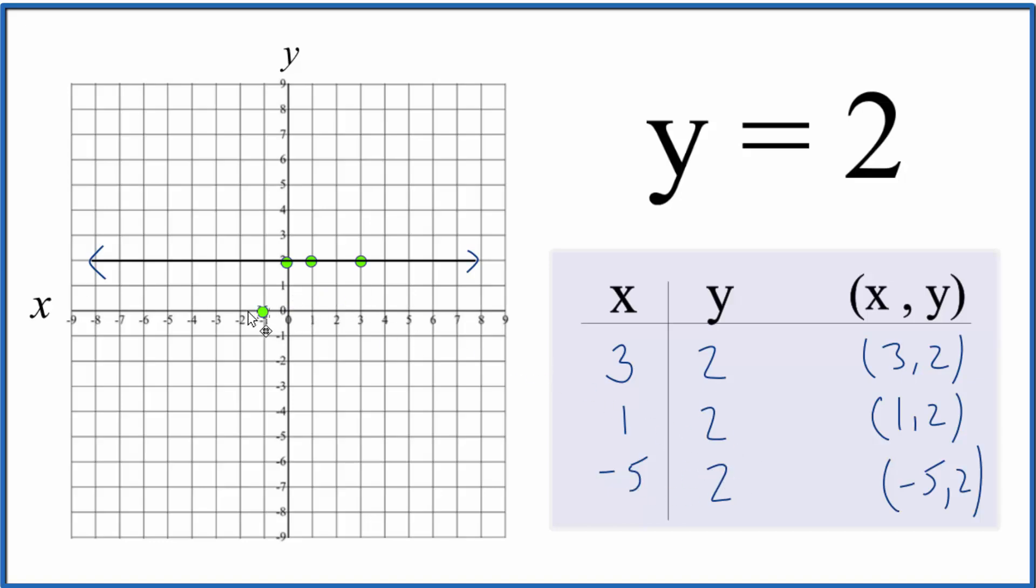Negative 5 for x, y is 2. Right there. So this is the graph for y equals 2.